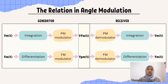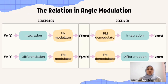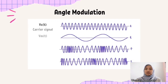How are Frequency Modulation and Phase Modulation related in Angle Modulation? From the block diagram at the generator, the modulating signal must pass through integration and PM modulation to obtain an FM signal. At the receiver, both modulated signals go through the same block system in reverse to recover the modulating signal.